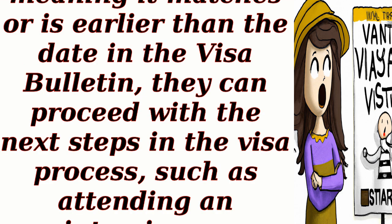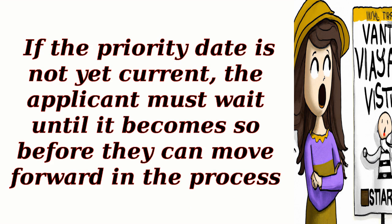When an applicant's priority date becomes current — meaning it matches or is earlier than the date in the visa bulletin — they can proceed with the next steps in the visa process, such as attending an interview or submitting additional documentation. If the priority date is not yet current, the applicant must wait until it becomes so before they can move forward in the process.